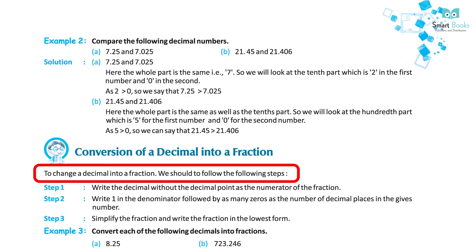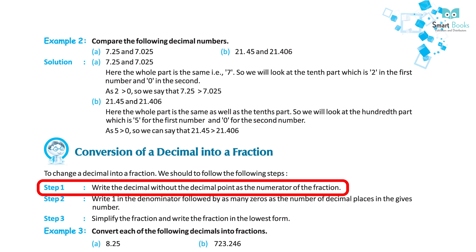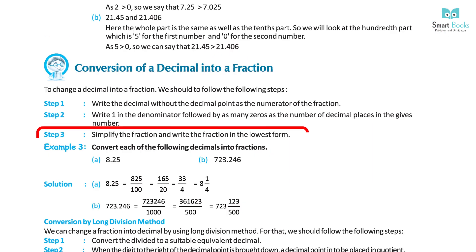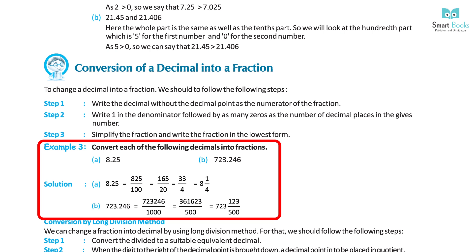Conversion of a decimal into a fraction: To change a decimal into a fraction, follow these steps. Step 1: Write the decimal without the decimal point as the numerator. Step 2: Write 1 in the denominator followed by as many zeros as the number of decimal places in the given number. Step 3: Simplify the fraction and write it in lowest form.